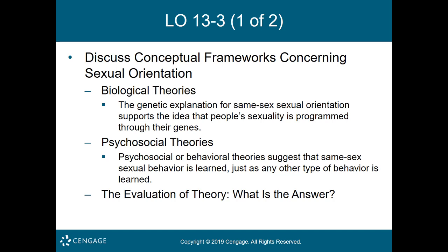At present there are no clearly established brain differences related to sexual orientation. Hormonal theories suggest that hormonal type and level cause homosexuality, but research has established no relationship between hormonal levels and sexual orientation — either during the prenatal period or in adulthood. Psychosocial or behavioral theories suggest that same-sex sexual behavior is learned just as any other behavior is learned.